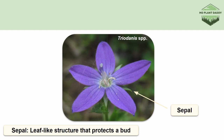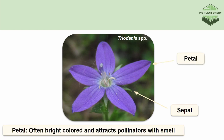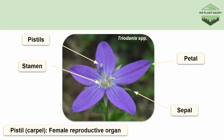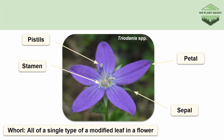Next we have the modified leaf that flowers are most known for, which are their petals. Petals are often bright colors but they don't have to be, and they produce nice scents that might help to attract pollinators. Our next modified leaf are the stamens, which are the male reproductive organs of the flower. Lastly we have our pistil, otherwise known as the carpel, which is the female reproductive organ of a flower. Each type of modified leaf belongs to its own group or whorl in the flower — a whorl is all of a single type of modified leaf on a flower.